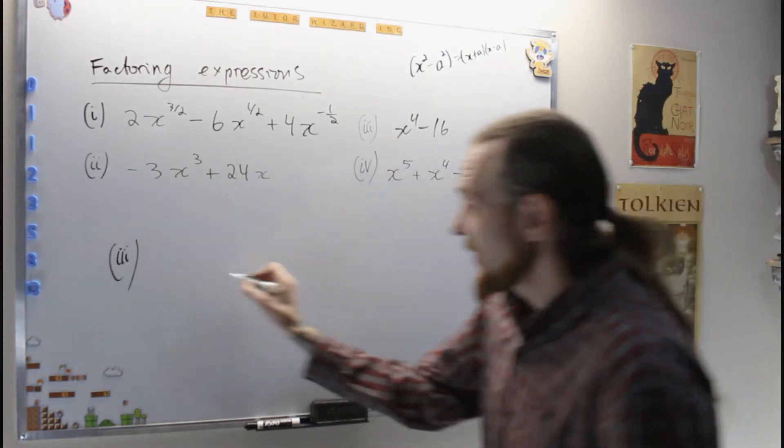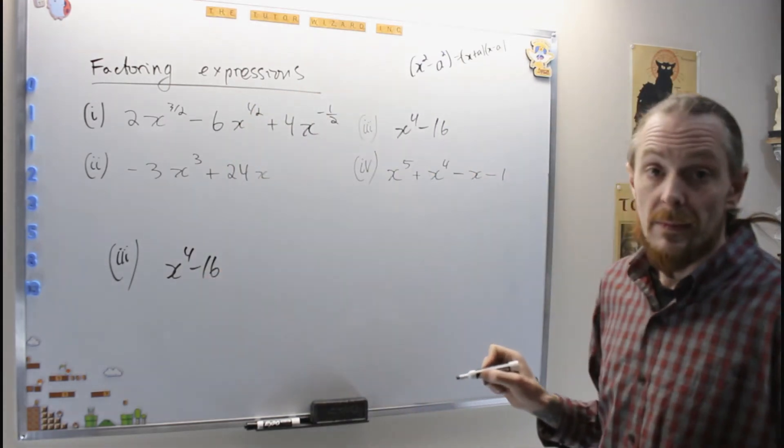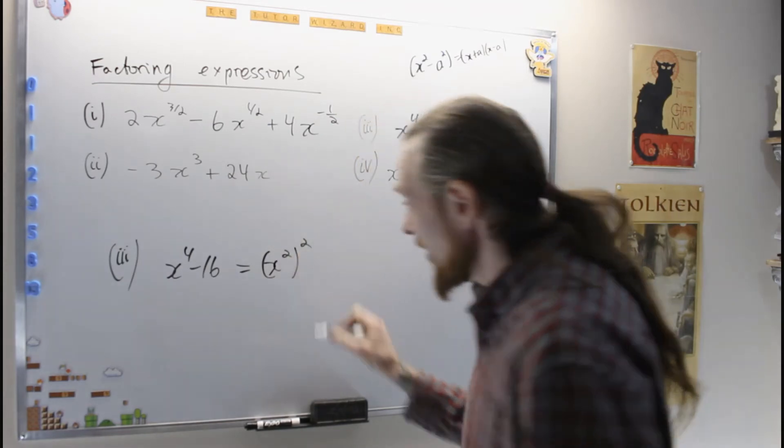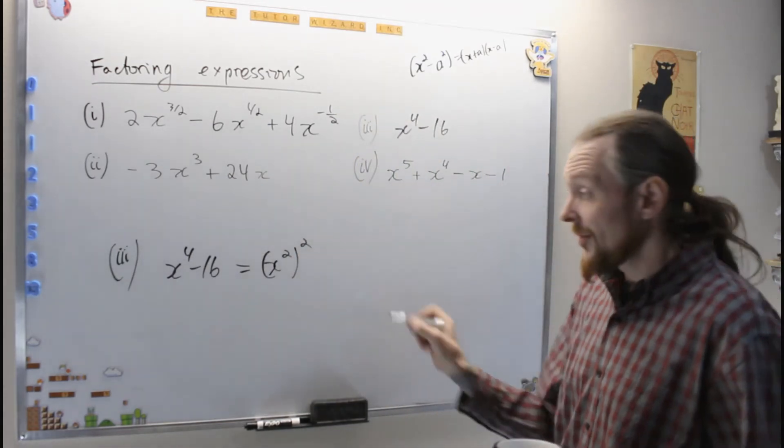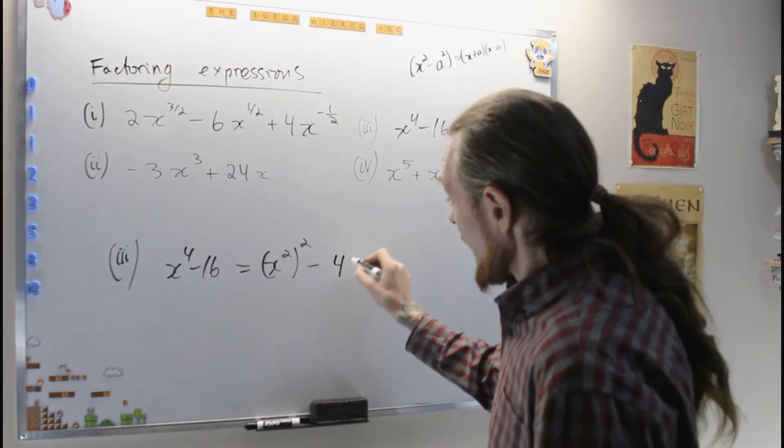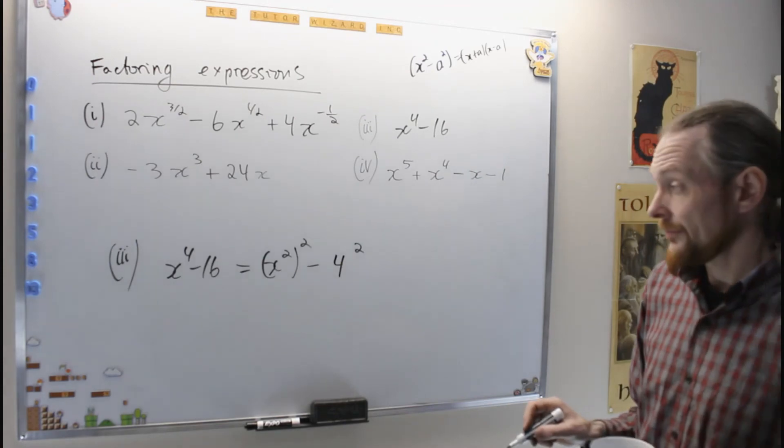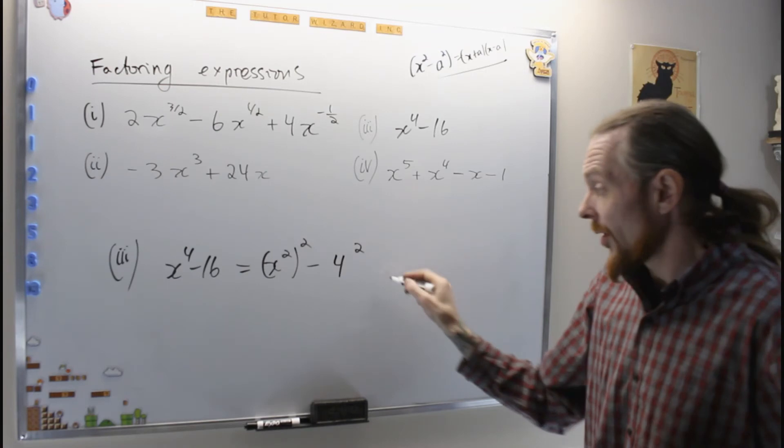So first I see I have x to the 4 minus 16. What I see is that is x squared, squared, using exponent laws, that's 4 is 2 times 2, and then I separate them, minus 4 squared, 16.